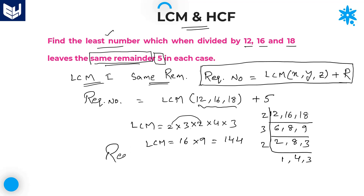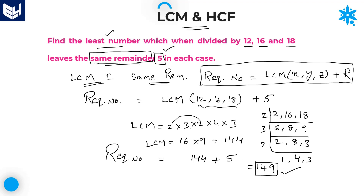The required least number is equal to 144 plus we want additionally a remainder of 5 in each case. While dividing that particular least number by 12, the remainder is 5; while dividing by 16, remainder is 5; while dividing by 18, remainder is 5. So 144 plus 5 equals 149. Therefore, 149 is the least number which when divided by 12, 16, and 18 leaves the same remainder 5 in each case.